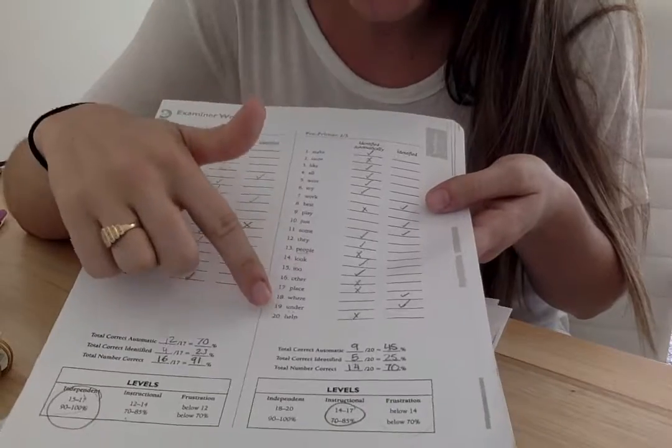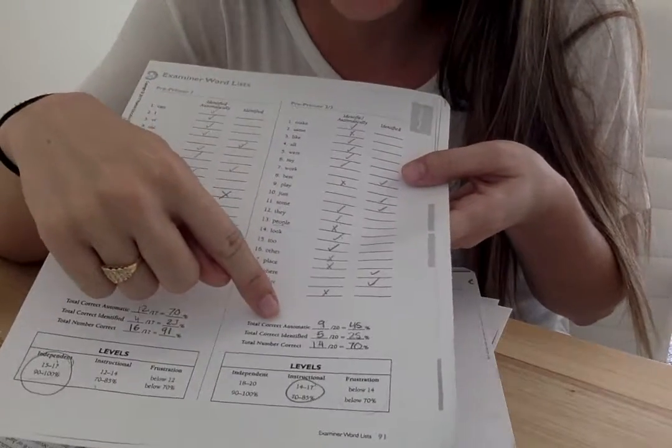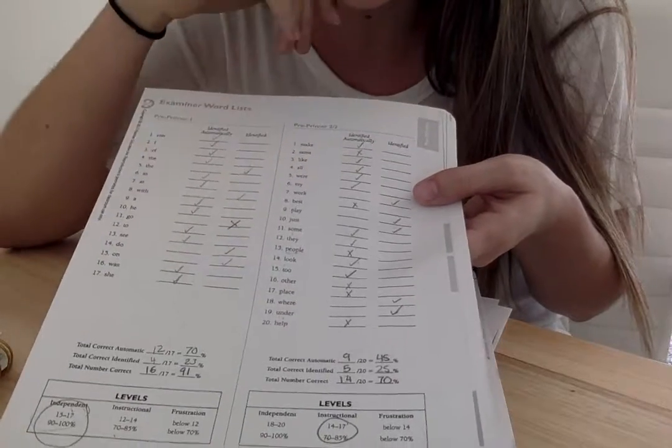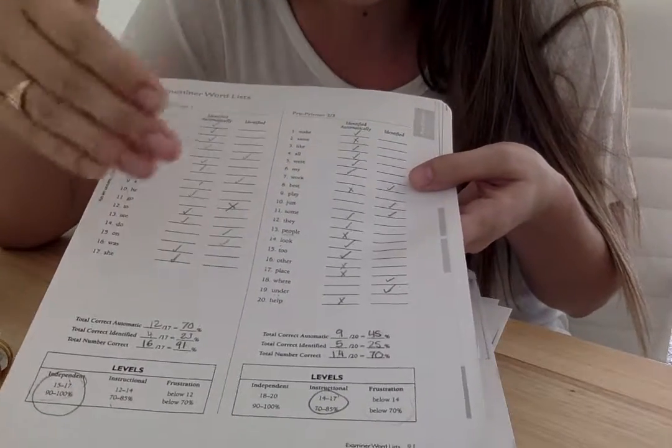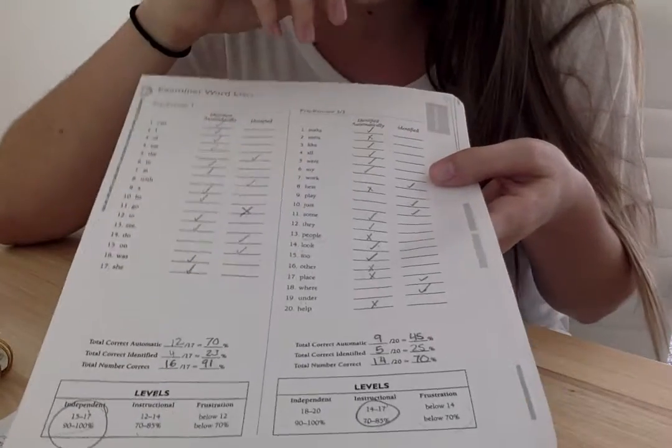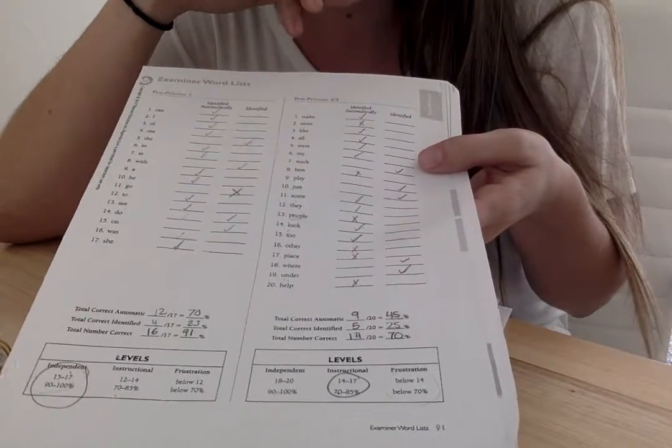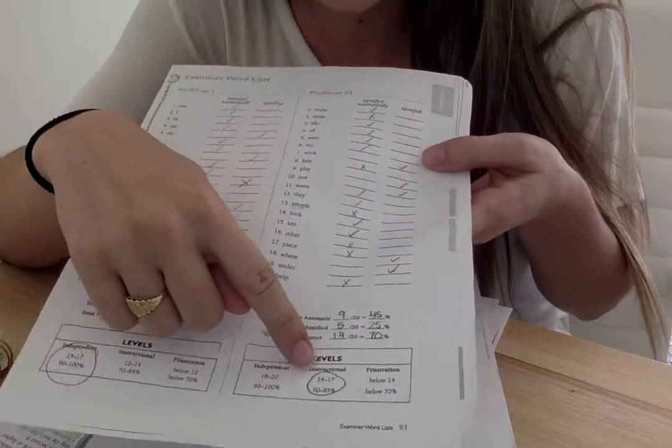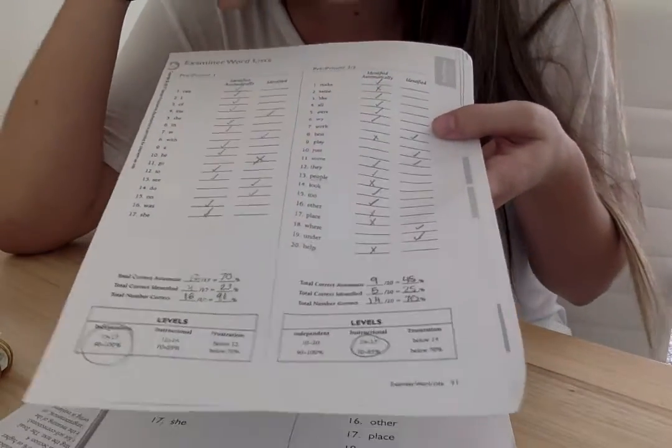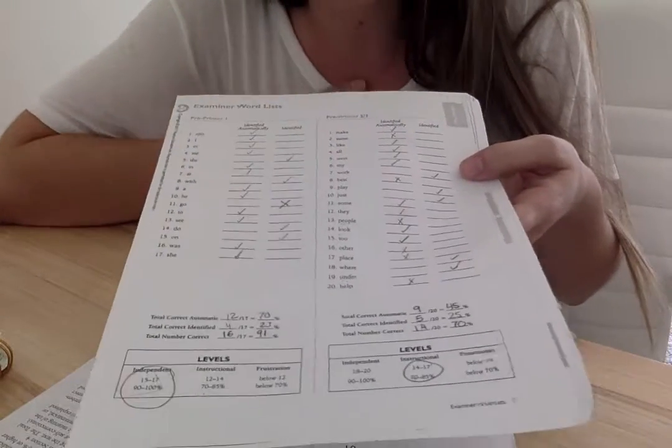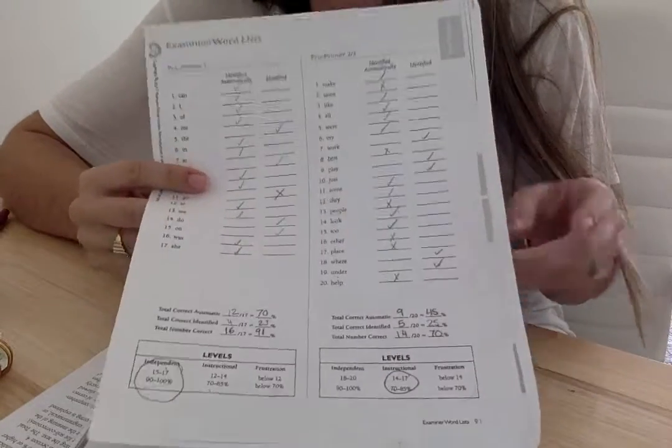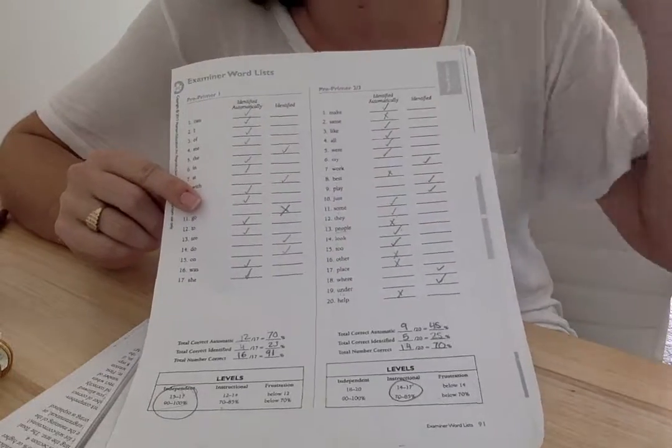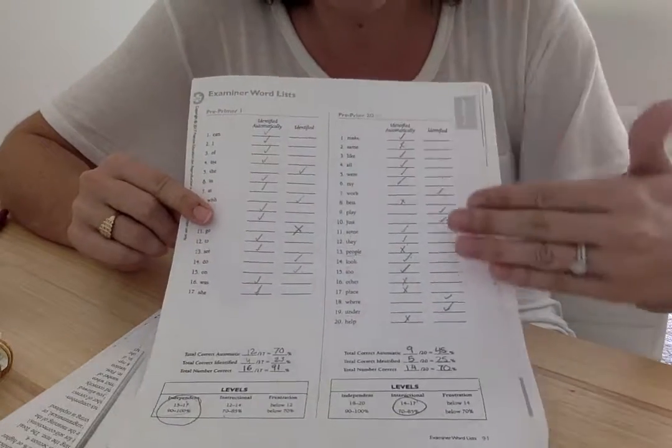So there was 20 words, and he was able to automatically identify nine out of those 20. And then he was able to identify five out of 20 on top of that. So that gave him a total of 14 words out of 20, leaving him at a 70%, which means that that's his instructional level. An instructional level is where I want to be at with him because I want to be able to teach him more of these words so that he's able to eventually be at that independent level with this word list as well.